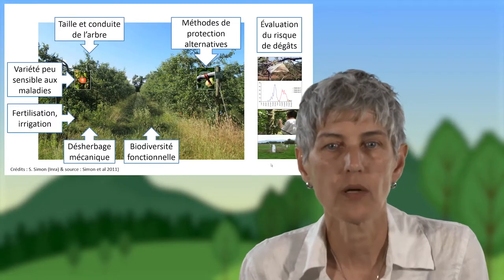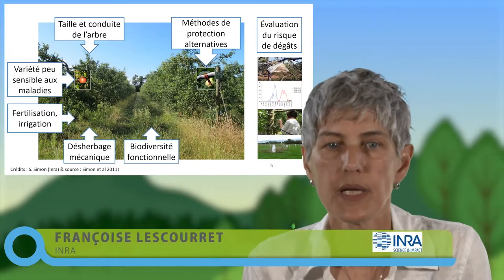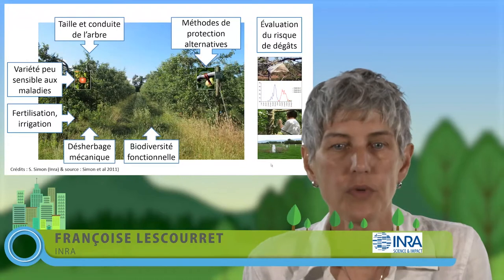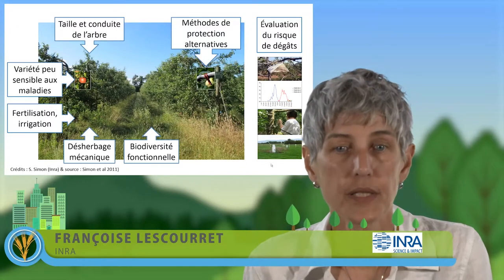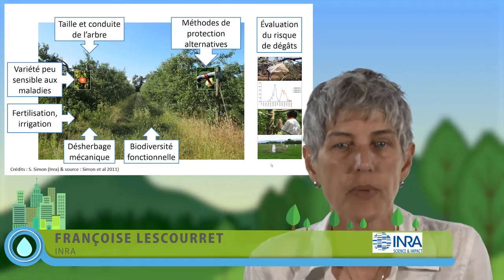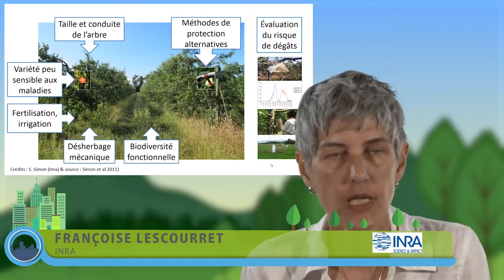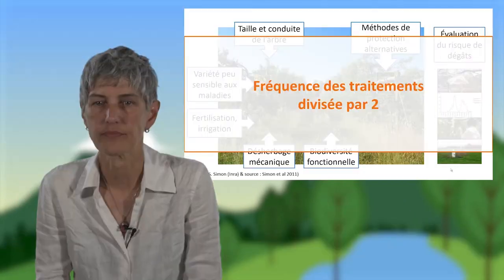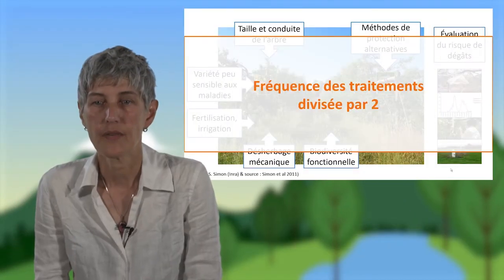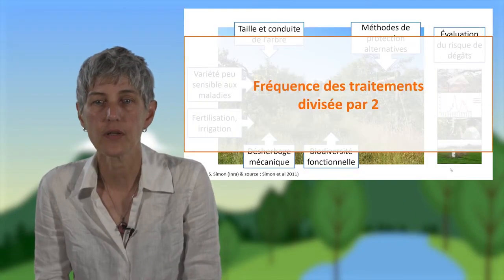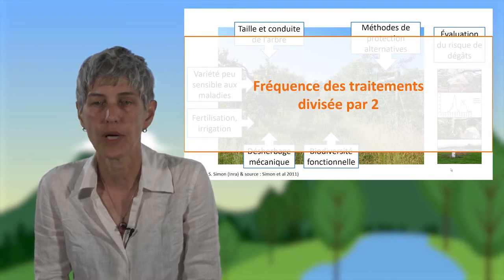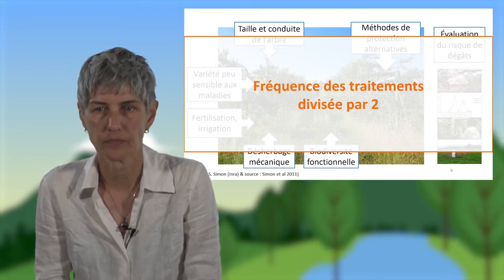Au cours de la campagne, le risque de dégâts par les maladies et les ravageurs est évalué par des techniques de piégeage, par des modèles, par des comptages et par des suivis météorologiques. Avec ce verger reconfiguré, la fréquence des traitements pesticides a été divisée par deux par rapport à un verger conventionnel.